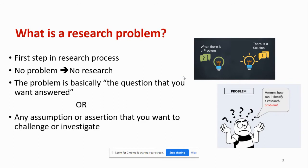A research problem is the first step in any research process. There is a saying that if there is no problem, then there is no need to do research. A research problem is basically a question that we want to answer, or maybe an assumption that we want to investigate. When we identify and solve that research problem, we can reach a solution that would improve our life.